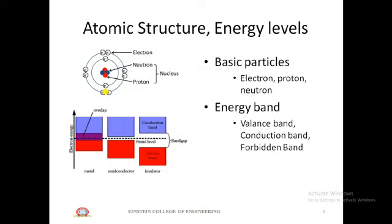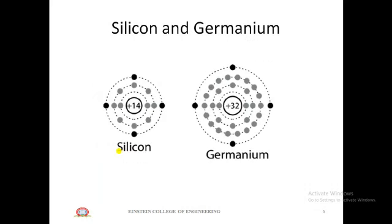The electrons in the outermost orbit are called valence electrons. All electrons have energies, and the range of these energies is known as the energy band. There are three types: valence band, conduction band, and forbidden band. In conductors, the valence band and conduction band overlap, so electrons move easily to the conduction band. In insulators, the forbidden gap is large so electrons cannot jump. In semiconductors, the gap is small so valence electrons can gain energy and jump to the conduction band. This property is used in electronic devices.